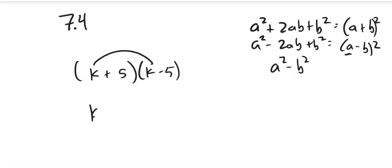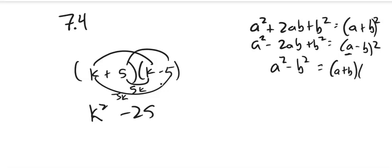So k times k is k². 5 times 5 is -25. There's those pieces. And notice since this is plus and minus, that would be a positive 5k, that would be a negative 5k. It drops out.